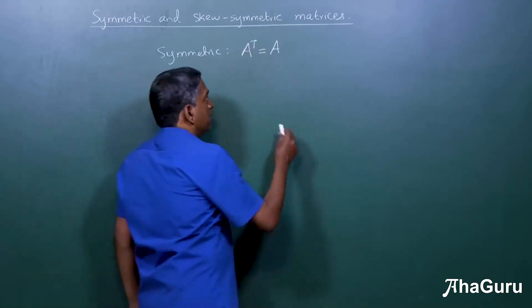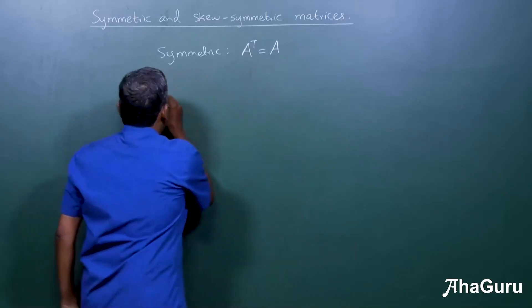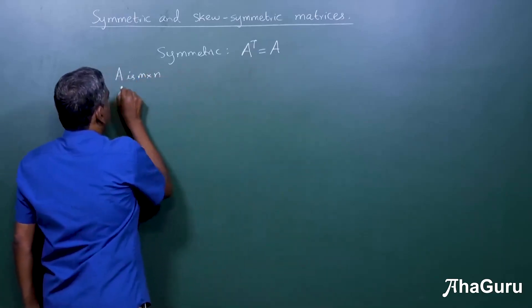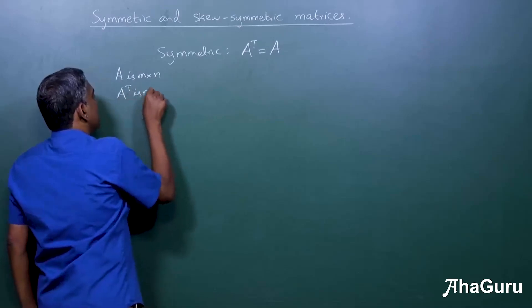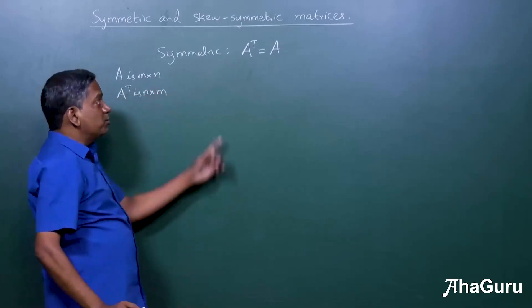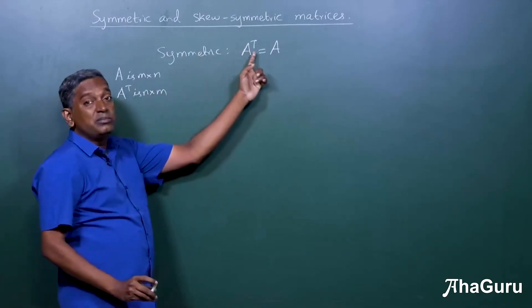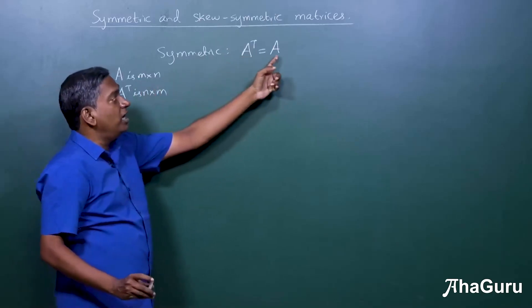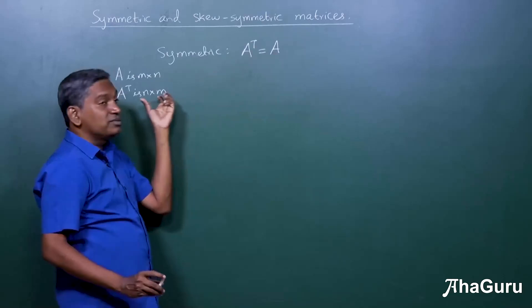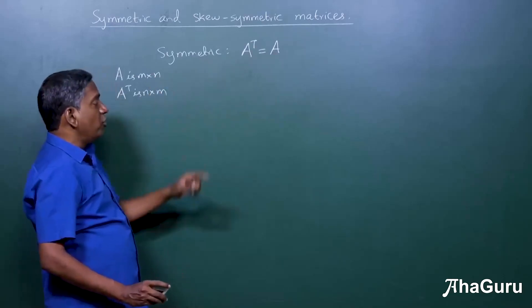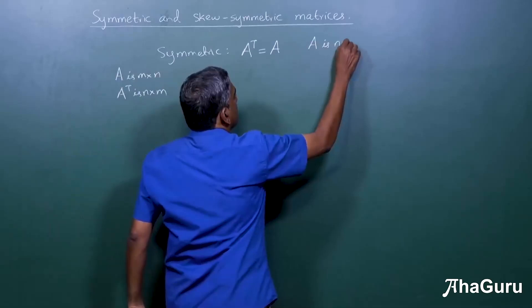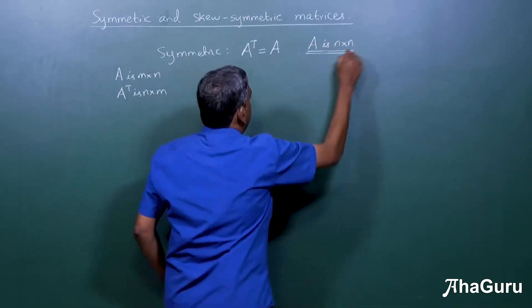So let's take an example. Now first if A is m by n then we know that A transpose is n by m. That means in order for a matrix to be symmetric it must be a square matrix. That means m and n should be equal. Otherwise you can't have equality of matrices with these two different orders. So which means A is a square matrix n by n.